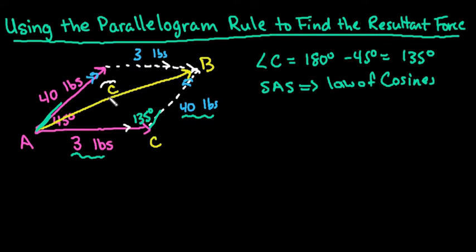To find side C, I can say that C squared equals A squared plus B squared minus 2AB cosine of 135 degrees.